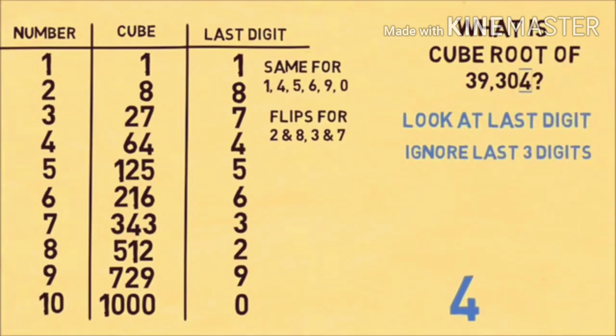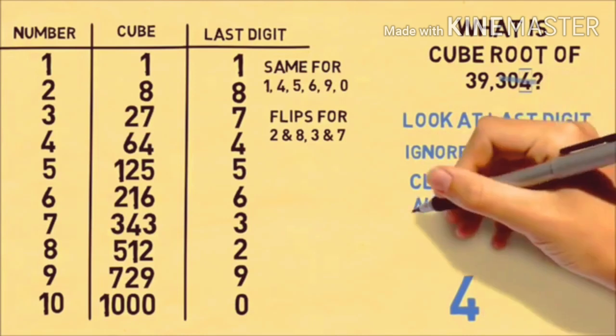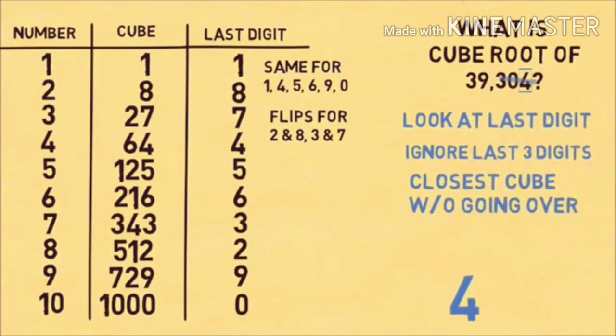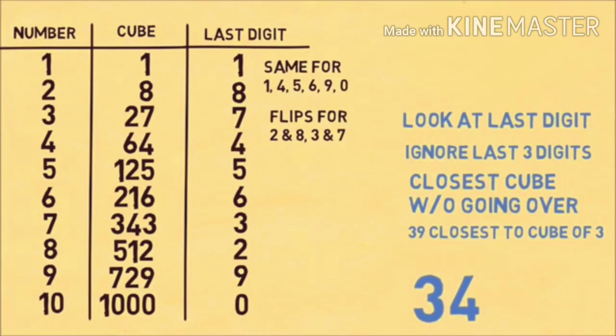The next step is to ignore the last 3 digits of our number. In 39,304, we ignore the 304. Now we find the closest cube without going over. 39 is between 27 and 64, so it's closest to 27 without going over, which is the cube of 3. That gives us the other part of our answer: 3. Put the numbers together, and 34 is the cube root of 39,304.